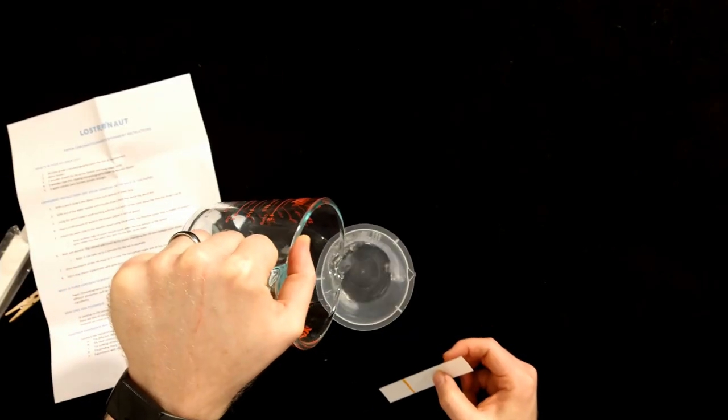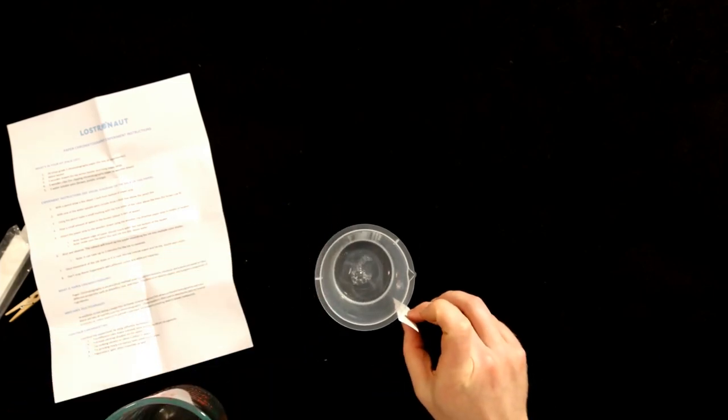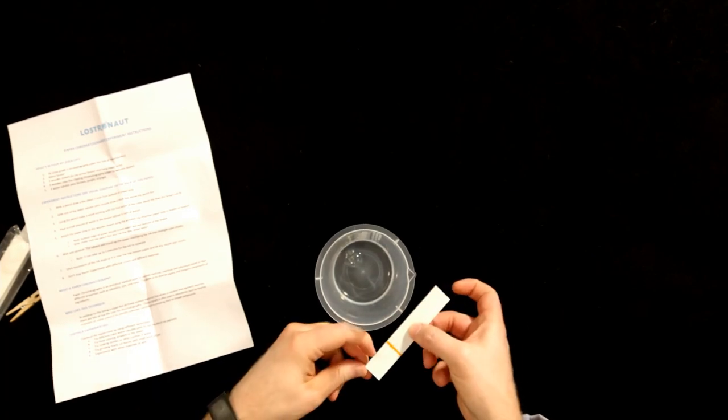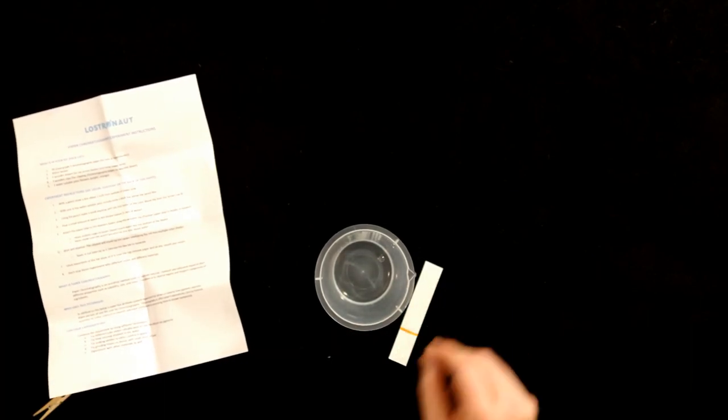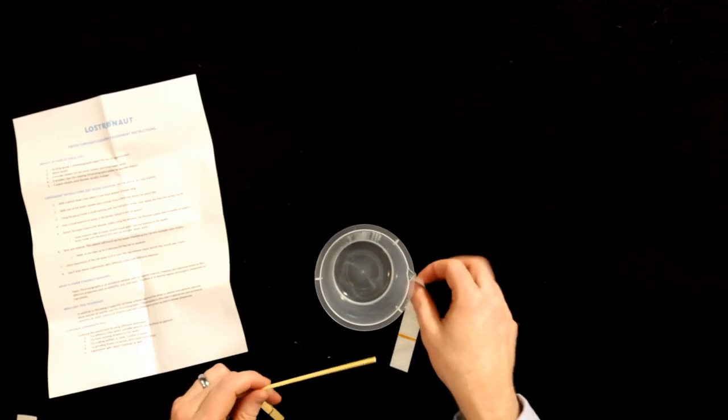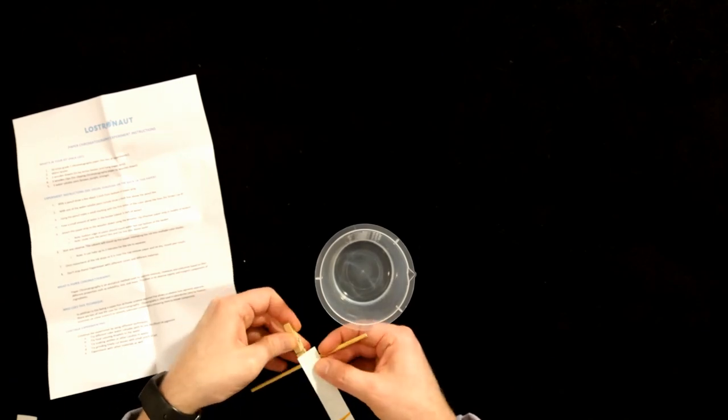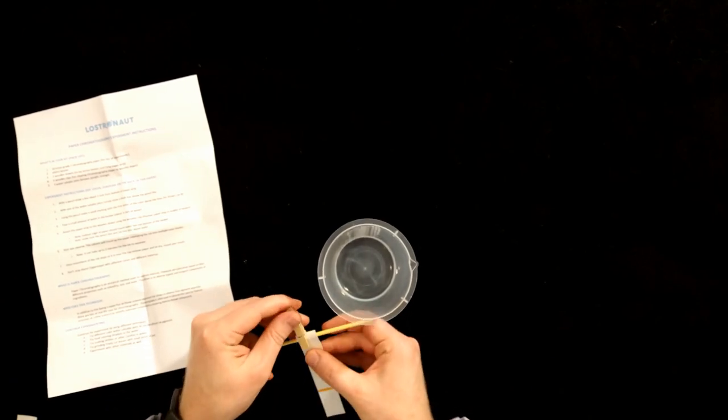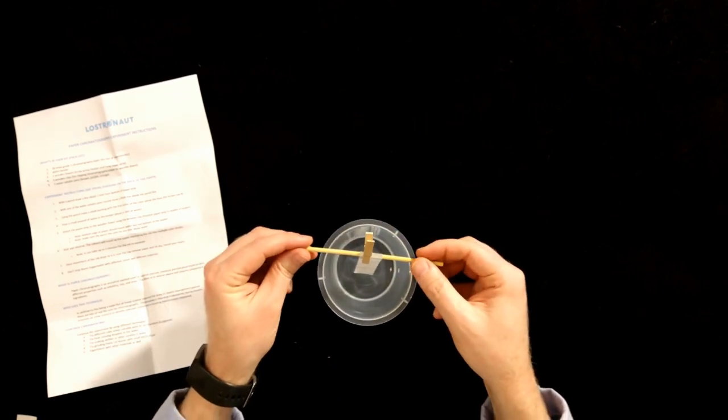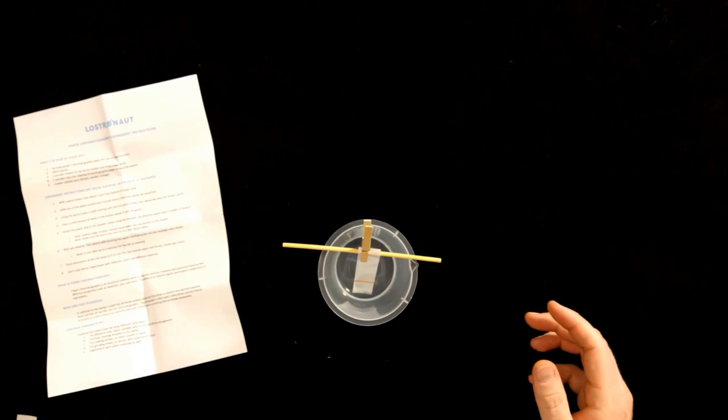And then, pour a small amount of water into the beaker. I want to make sure that's not as tall as the line. So I've poured water up to about this level. Then, take one of our wooden dowels. Attach our paper strip to the wooden dowel. I'll position the paper in the middle of the beaker. So we're going to let that hang. And then we wait.